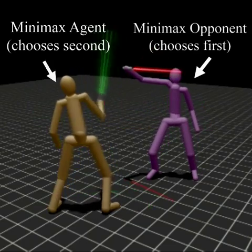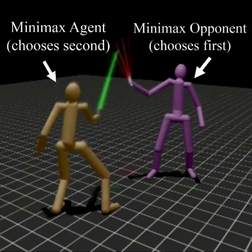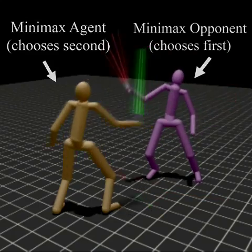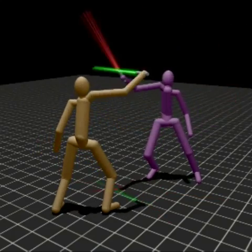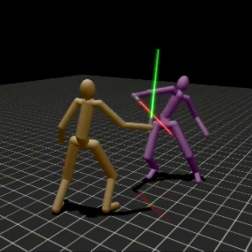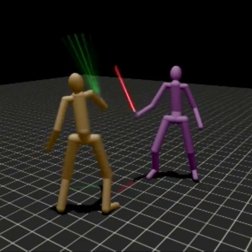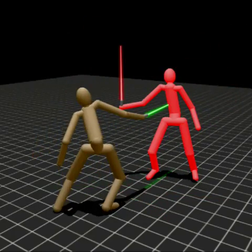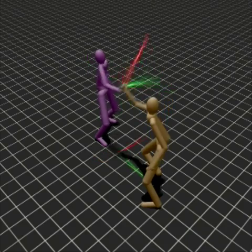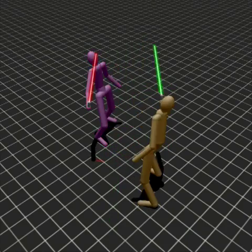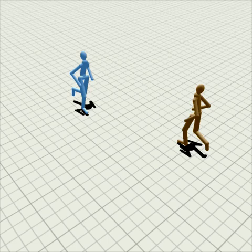This shortcoming is even more pronounced in the sword fighting game. Here, the character choosing to move second has an obviously unrealistic advantage, essentially predicting the opponent's move before it happens. In most cases, these animations look highly unintelligent.